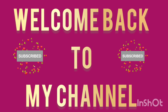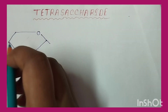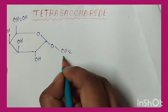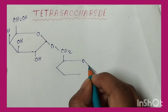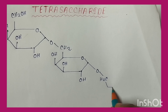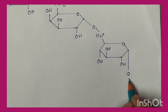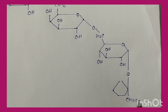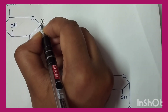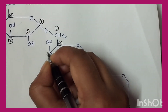Hello friends, welcome back to my channel. Today I will start tetrasaccharide, which is an example of oligosaccharide. I have presented tetrasaccharide structures. It is a very easy structure because we know glucose, galactose, and fructose structures — two galactose, one glucose, and one fructose molecule linked up to make a tetrasaccharide.